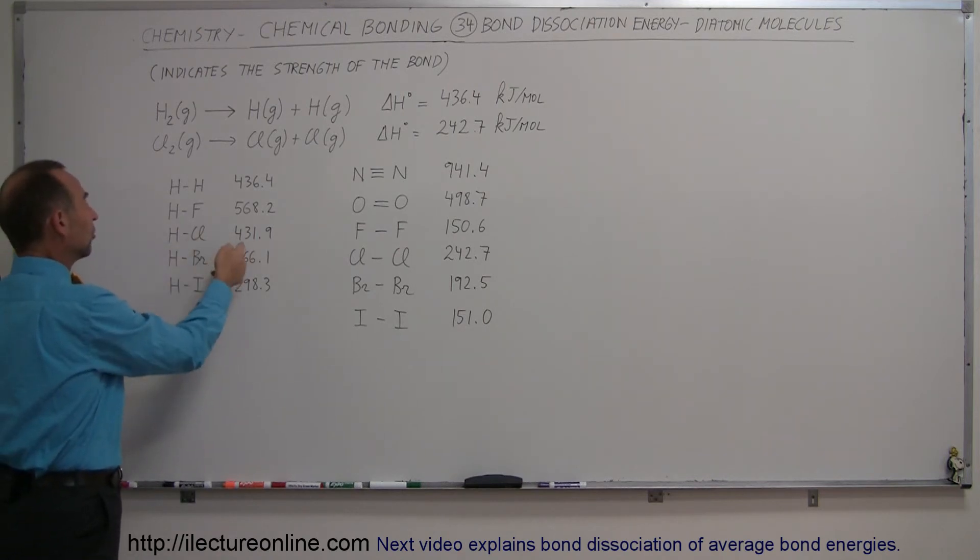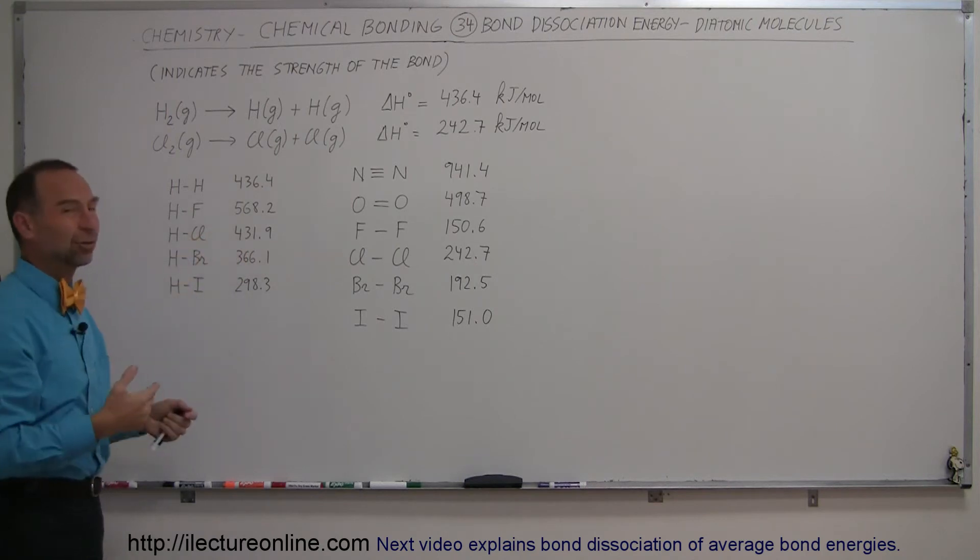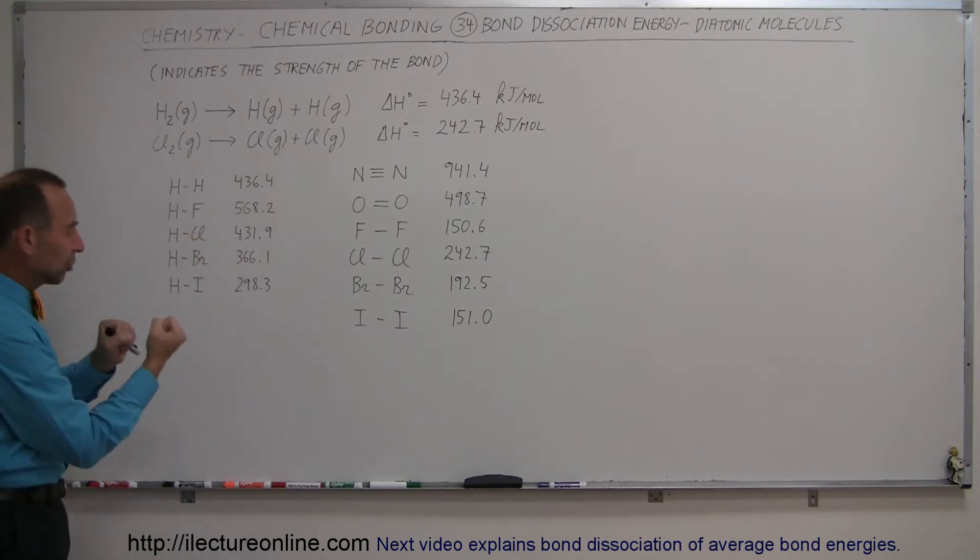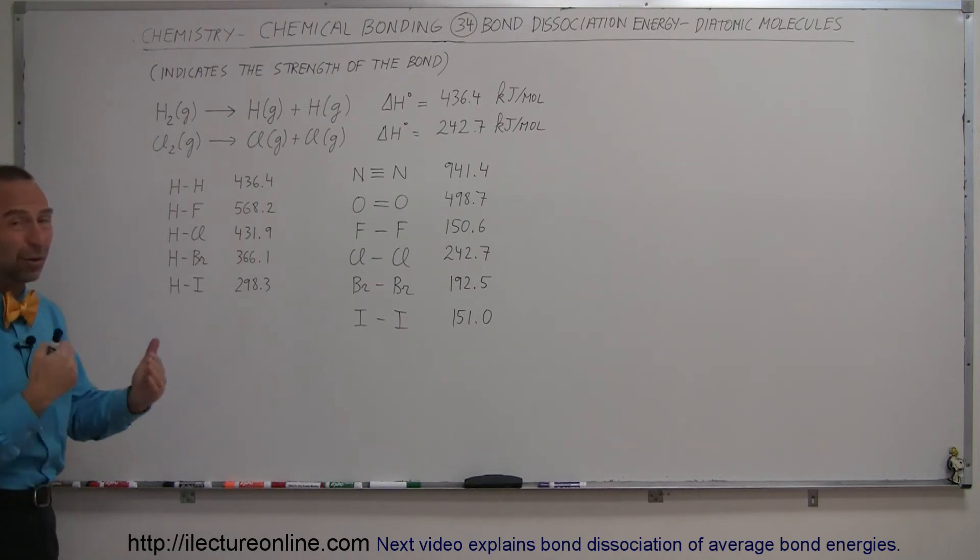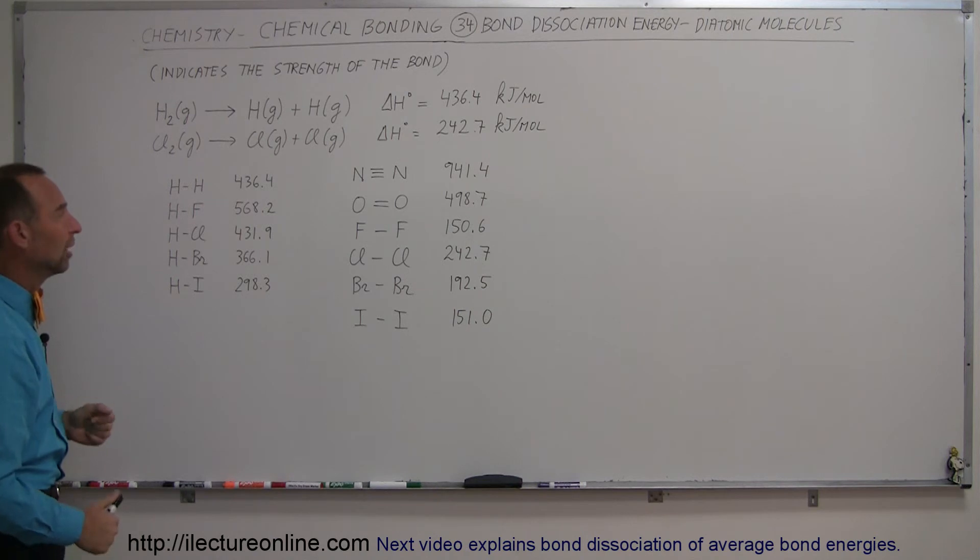Hydrogen-chlorine bonds are easier to break because chlorine is not as electronegative, and so less likely to hold on to it as strongly. Hydrogen and bromine, you can see that's even less. And hydrogen-iodine, that's even less as the electronegativity decreases. There's definitely a relationship between the electronegativity and the bond dissociation energies.